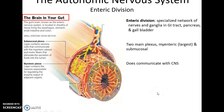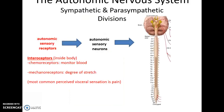The enteric nervous system is sometimes called the 'brain of your gut.' It is a specialized network of nerves and ganglia in the gastrointestinal tract, the pancreas, and the gallbladder. There are two large plexuses within the gastrointestinal tract: the myenteric plexus and the submucosal plexus. It does communicate with the central nervous system.